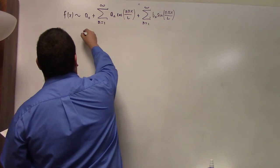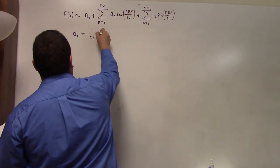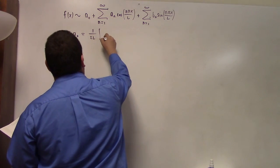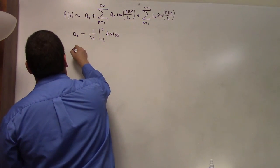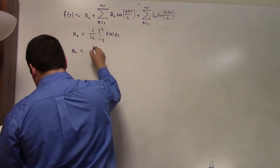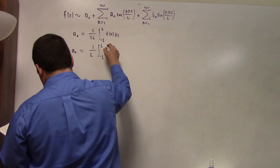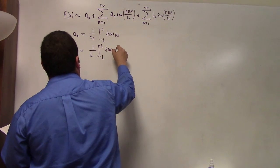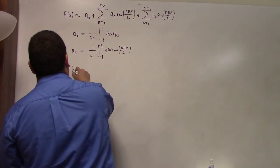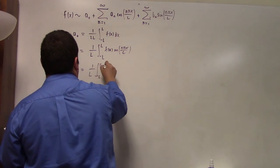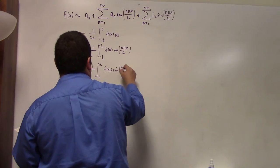So this guy has a-sub-naught equal to 1 over 2L, integral from minus L to L of f(x) dx. It has a-sub-n equal to 1 over L, integral from minus L to L of f(x) cosine(nπx/L). And it has b-sub-n equal to 1 over L, integral from minus L to L of f(x) sine(nπx/L).